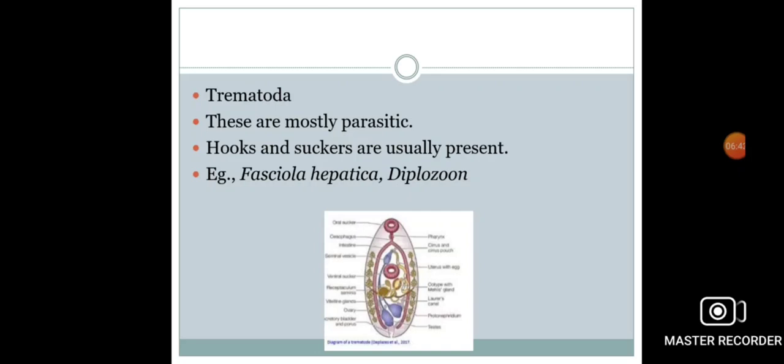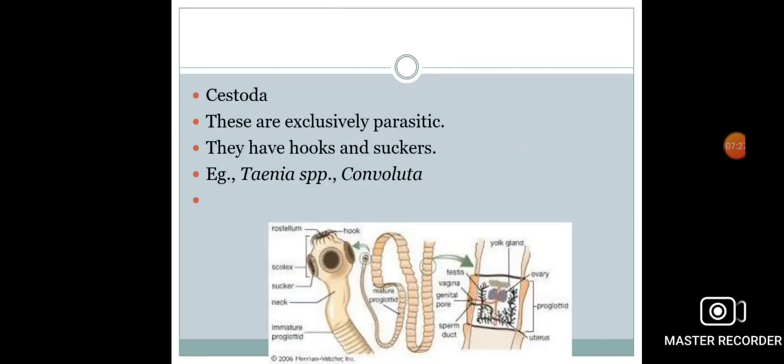Next class is Trematoda. In the class Trematoda, most of the trematodes are parasites. They live inside the body of their host and they live a parasitic life. They have well-developed hooks and suckers, and these hooks and suckers are the organs of attachment. They are attached to the internal wall of their host. Examples of Trematoda are Fasciola hepatica, Diplozoon, etc.